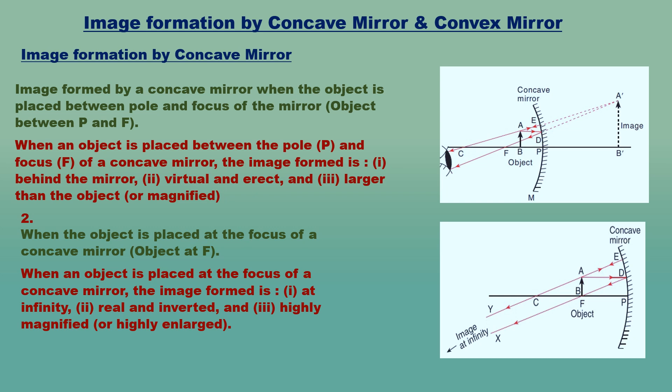Image formation by a concave mirror — Case 1: when the object is placed between the pole P and focus F. A ray AD parallel to the axis gets reflected and passes through focus F. A second ray AE passing through the center of curvature C strikes the mirror normally and gets reflected back along the same path. When an object is placed between P and F, the image formed is: behind the mirror, virtual and erect, and larger than the object (magnified).